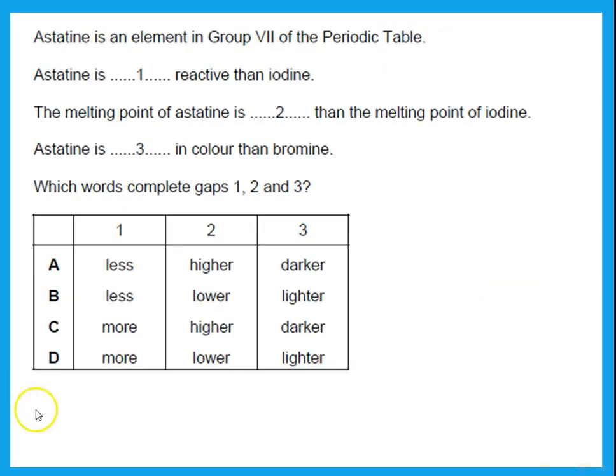Astatine is an element in group 7 of the periodic table. So astatine is what compared to iodine? More reactive or less reactive? Well, astatine is below iodine, so if it is below iodine, it will be less reactive. Melting point of astatine is, remember as we go down, the melting point increases, so actually it is higher. Astatine is darker in color, so my answer is A.